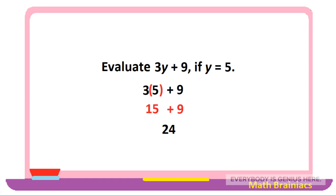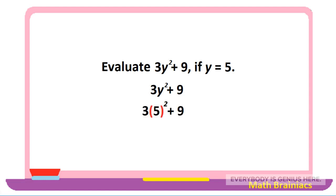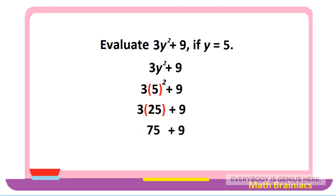Let us work on another example: evaluate 3y squared plus 9 if y is equal to 5. We write the equation 3y squared plus 9 and substitute y with 5, giving us 3 times 5 squared plus 9. Five squared is 5 times 5, which is 25, so we get 3 times 25 plus 9. Three times 25 is 75, and 75 plus 9 is 84. Therefore, 3y squared plus 9 is equal to 84 if y is equal to 5.